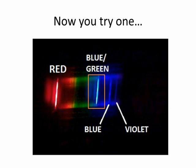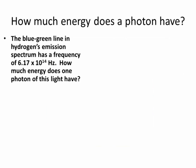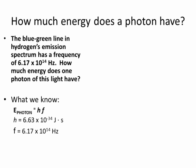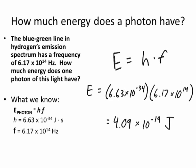Now try one with the blue-green light. One photon of blue-green light has how much energy? The frequency we solved for earlier was 6.17 times 10 to the 14th. Use the same equation and the same value for Planck's constant. Pause the video, solve, and then check your answer. If you did it right, you would have gotten 4.09 times 10 to the negative 19th joules of energy per photon of blue-green light.